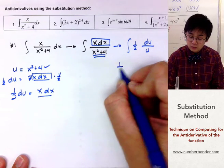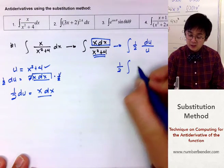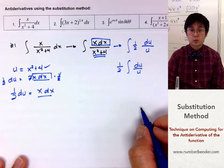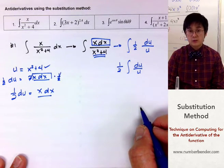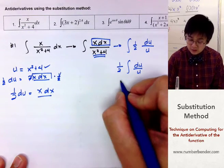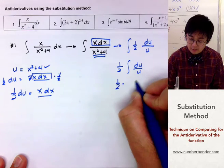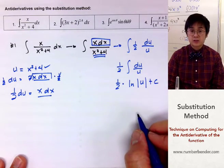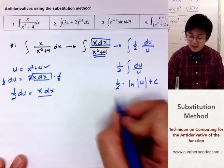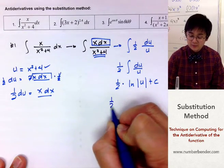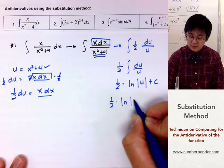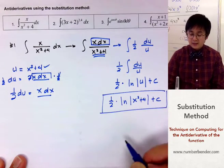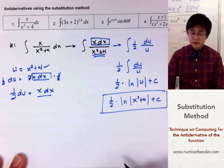By using the constant rule, one half will be outside the integral and I'm going to integrate du over u. By the integral rule, the antiderivative of 1/u is ln u. So this changes into one half times ln of u plus c. Substituting back, u is x squared plus 4, so the answer is one half ln of x squared plus 4 plus c.